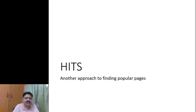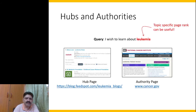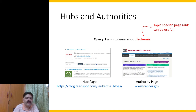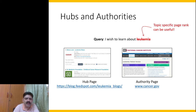There is also another approach to finding popular pages, called HITS. In the HITS algorithm, the objective is to assign a page rank to topic-specific topics. For example, if I care about leukemia and want to score all leukemia pages for popularity, this approach categorizes web pages into two classes: the hub and the authority.